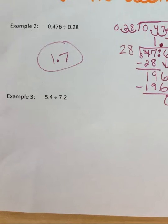The last problem on the notes was 5.4 divided by 7.2. Like always, we put the first number that we see in our little division house, and the second number goes on the outside.